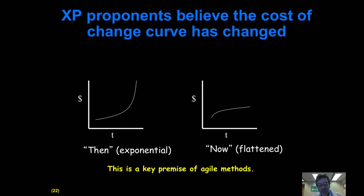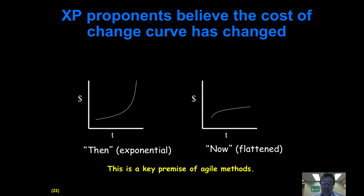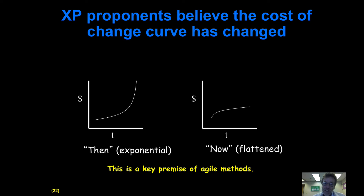The fundamental premise behind many agile methods is that in the past, the assumption was that the later you got in the development process, the more expensive it was to make fundamental changes. When people shipped magnetic tapes and binders full of documentation to customers with every new release, you wanted to make sure that release was very good because shipping new magnetic tapes and new copies of all the binders was quite expensive. But with the internet and continuous delivery processes, it's in fact quite cheap to make small changes to an existing large system and release those changes into production — the cost of change is not increasing much over time.